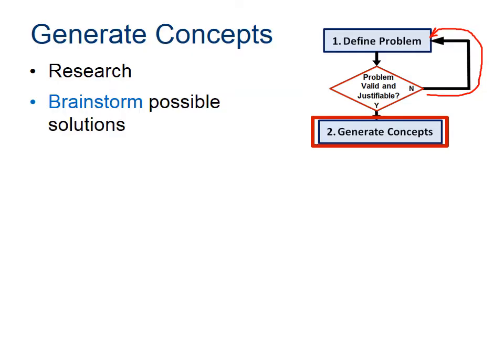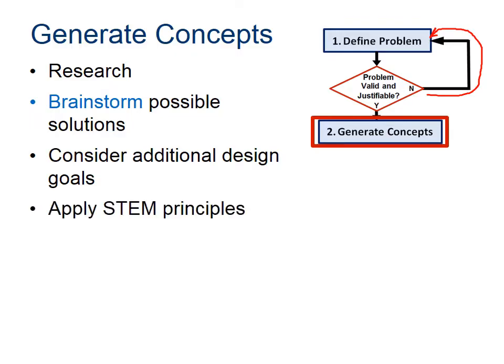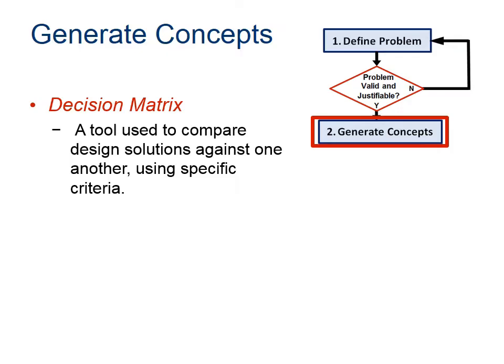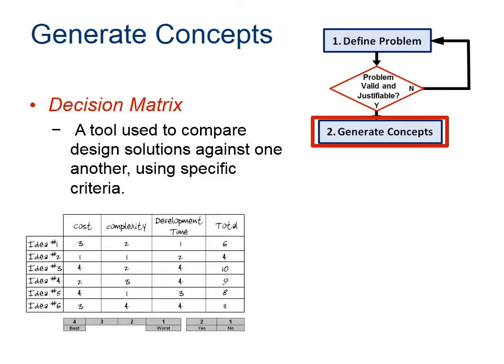You won't hear anyone say 'that's a really dumb idea' because there is no such thing. You also want to consider whether there are additional design goals. Then you want to apply some STEM principles — for example, you've all taken chemistry and you might want to apply the ideal gas law. That's something I used to do a lot in my aerospace career. Apply those principles, then figure out how you want to approach it. Once you've generated all these ideas, you're going to document them in a decision matrix — a tool that's usually a chart or table.